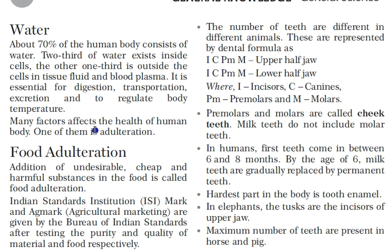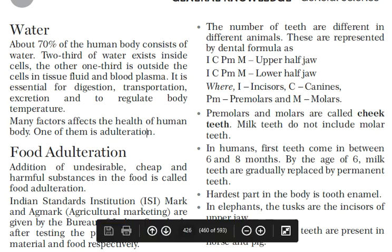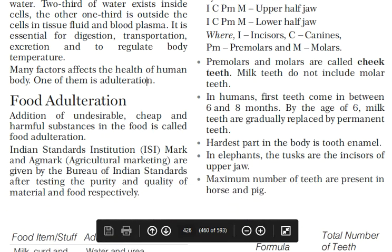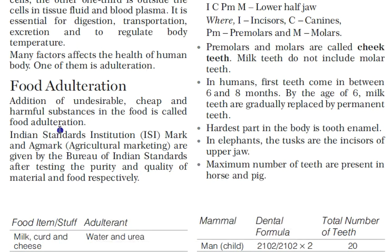Many factors affect the health of the human body; one of them is adulteration. Food adulteration means the addition of undesirable, cheap, and harmful substances in the food. When we mix undesirable or harmful products into a food item, it is called food adulteration.